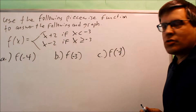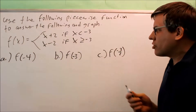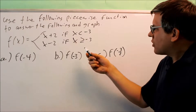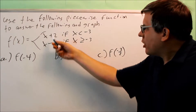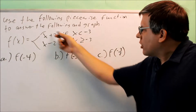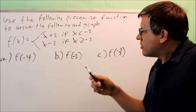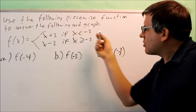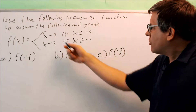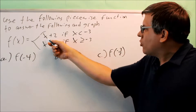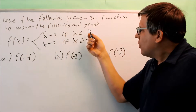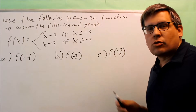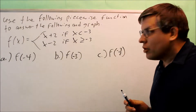We're working with piecewise functions. The question is, what is a piecewise function? A piecewise function is made up of two or more expressions, and each of these expressions has something on the end called a condition. So, they're saying that I can only use x plus 2 when x values are less than but not equal to negative 3.